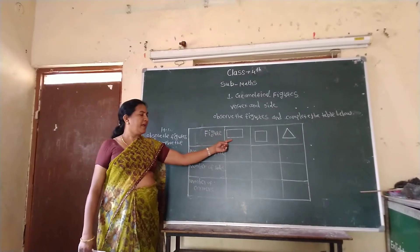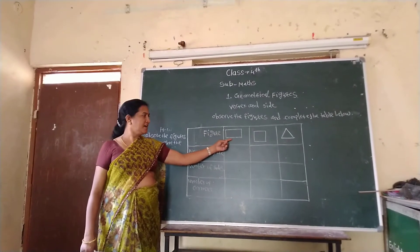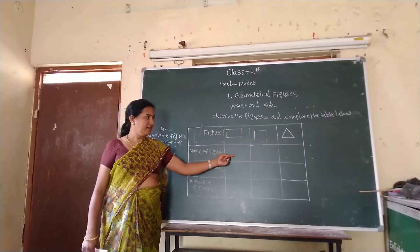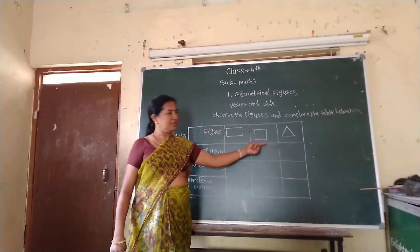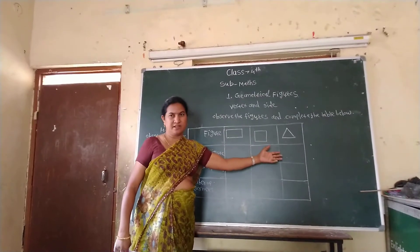Ye kya hai? This is a triangle. This is a square. This is a triangle.